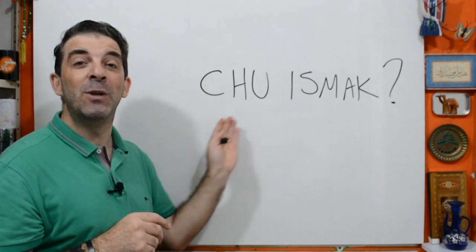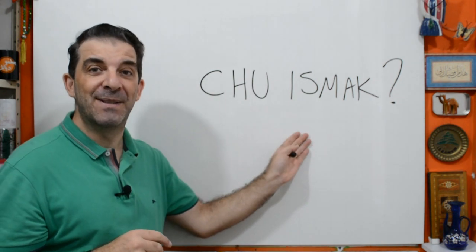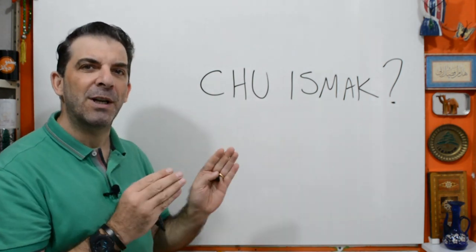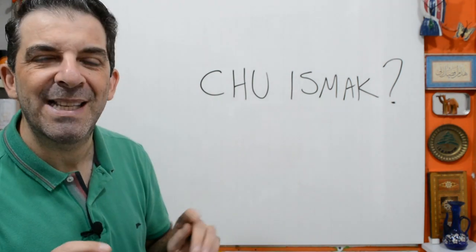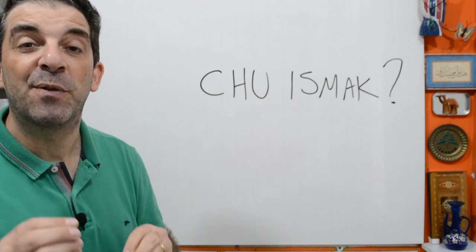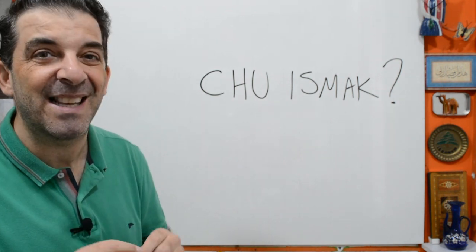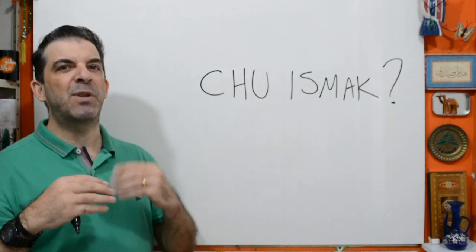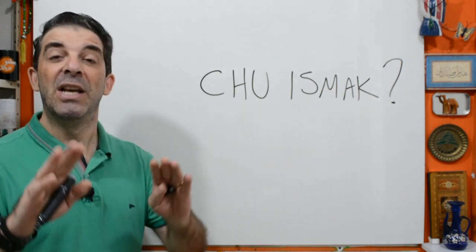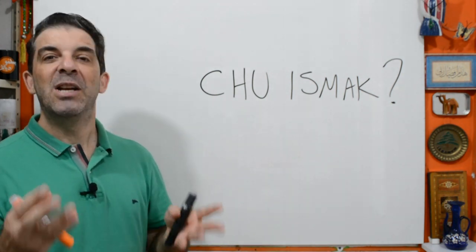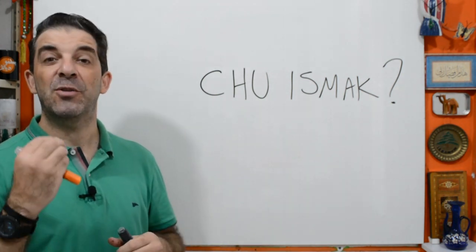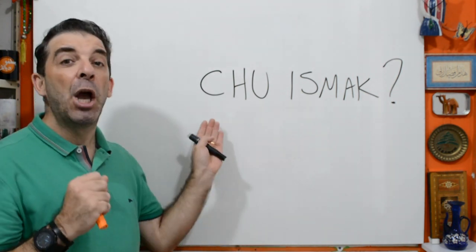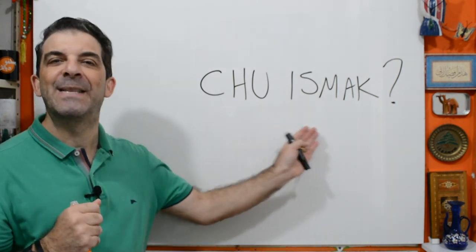This is it — only two words. In further lessons, you'll know why it's so short. It's because in Arabic, the verb 'to be' in the present doesn't exist. But these are subjects for further lessons. In this one, just know that to ask someone what's your name, simply say shuu ismak.